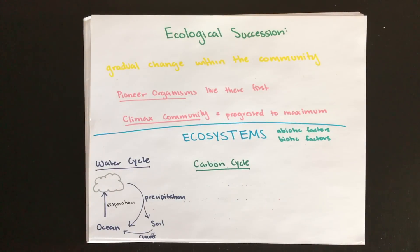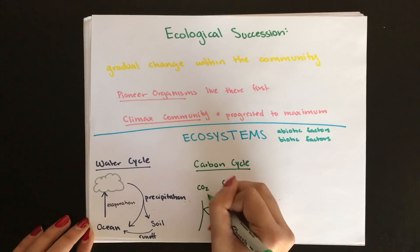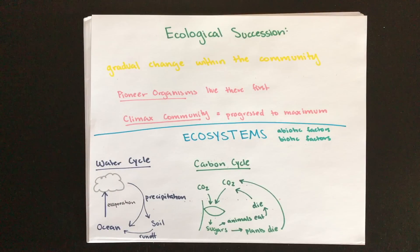Carbon is found as carbon dioxide in our atmosphere, and it is used by plants to form sugars through photosynthesis. Once the plants die and the animals that ate them die, all the carbon within them returns back to the soil and the cycle starts over again.